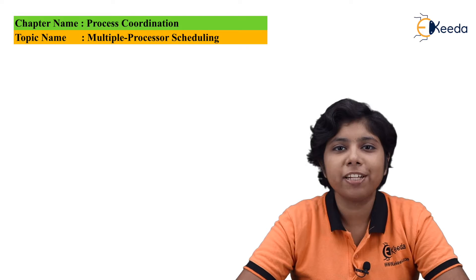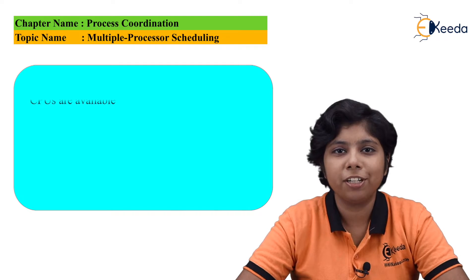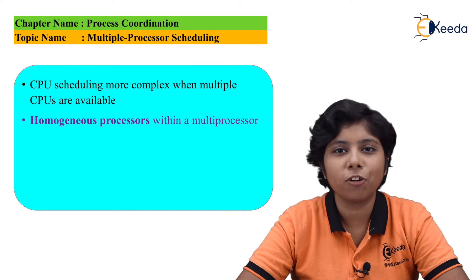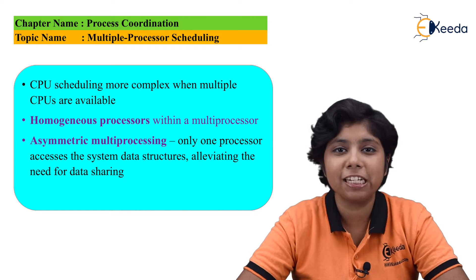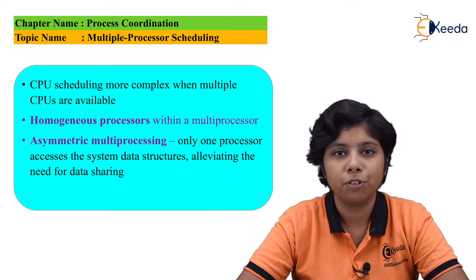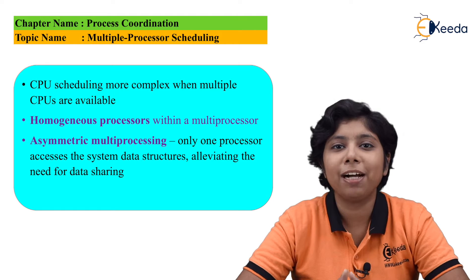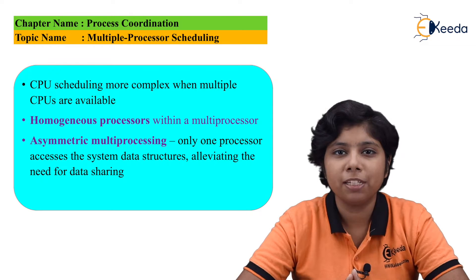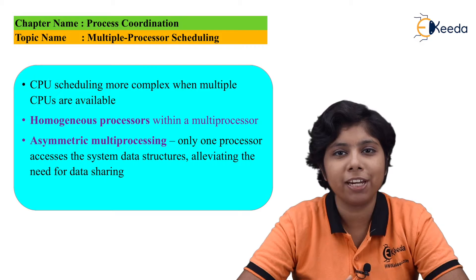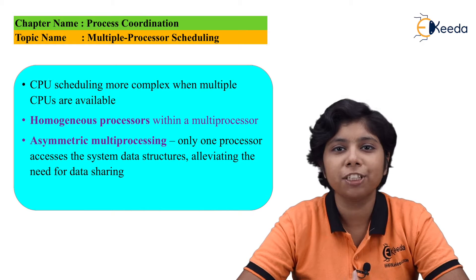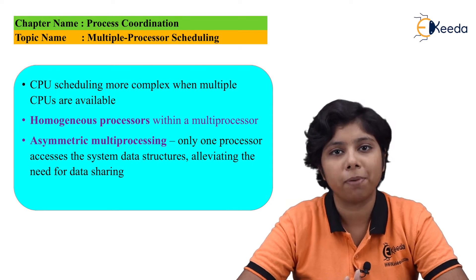Scheduling is very straightforward when we are talking about a processor with a single CPU. But as multiple CPUs are available, the load sharing may become very easier but the task of scheduling becomes correspondingly more complex.